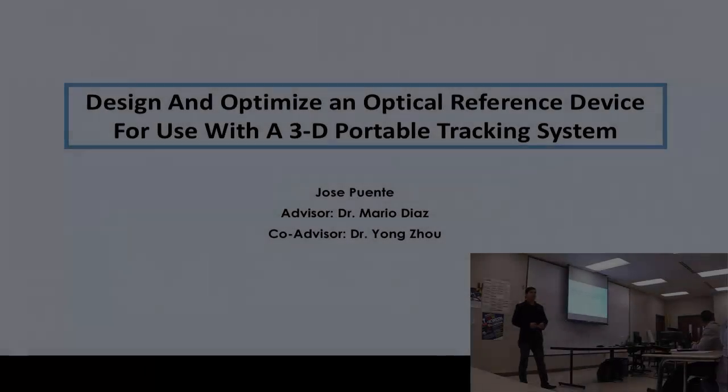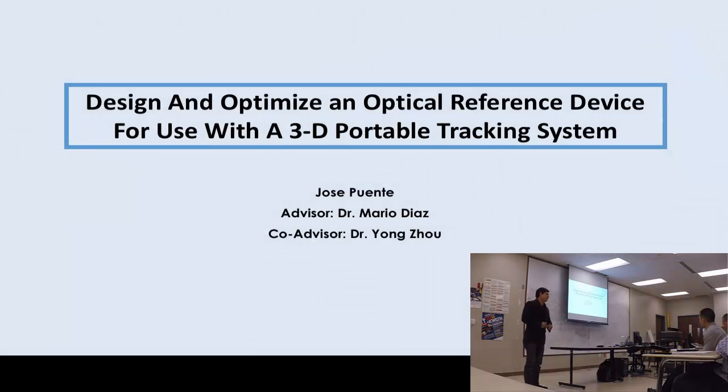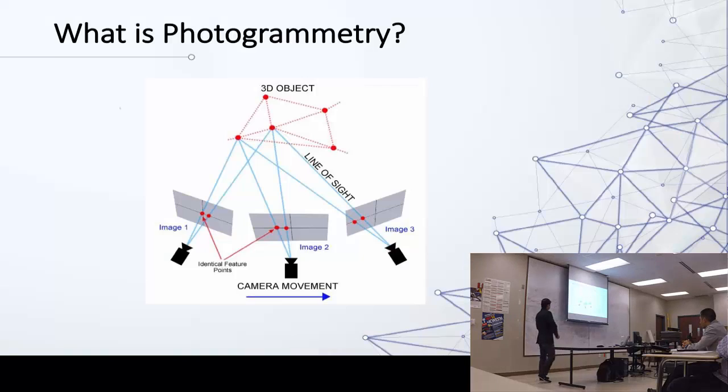Good afternoon, everybody. My name is Jose Puente. I'm presenting my project, which is to design and optimize an optical reference device. So in order to better describe my project, I have to describe what photogrammetry is. What is photogrammetry? It's the technique of measuring objects with a camera and determine their relative position or distance within a certain degree of accuracy.